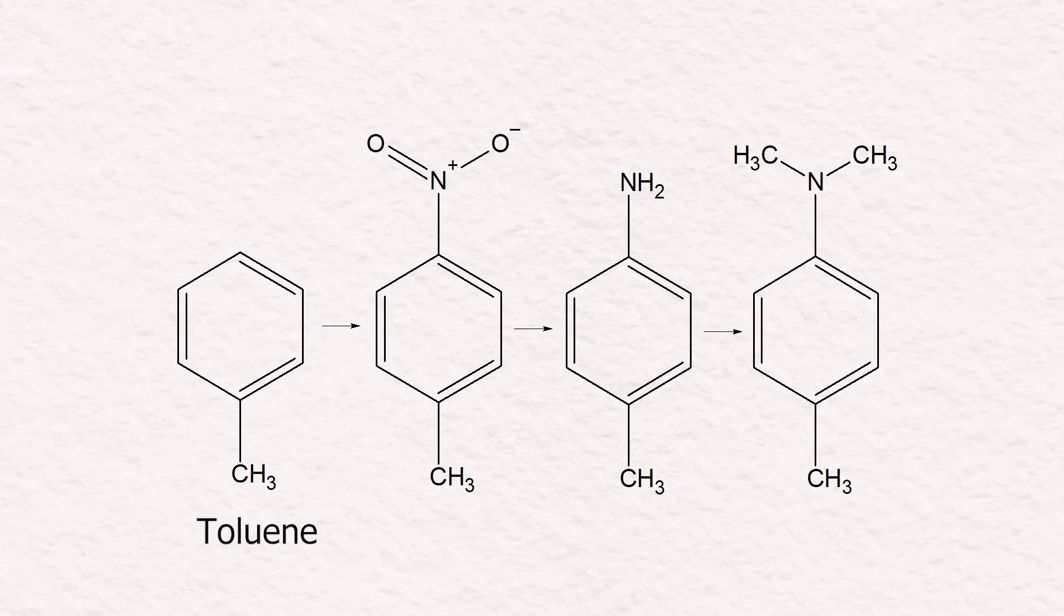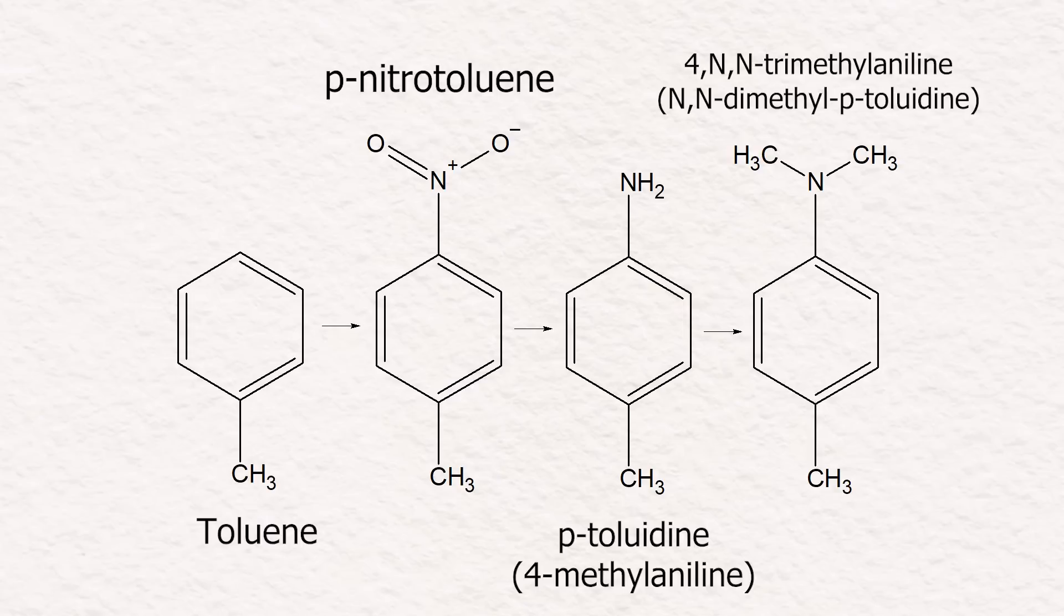The synthesis from toluene will require multiple steps. First will be the nitration of toluene in the para position, then the reduction of this nitro group to an amine, and then the dimethylation of the amine to produce the final superglue activator.